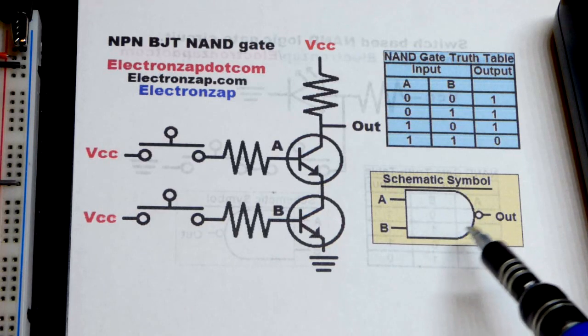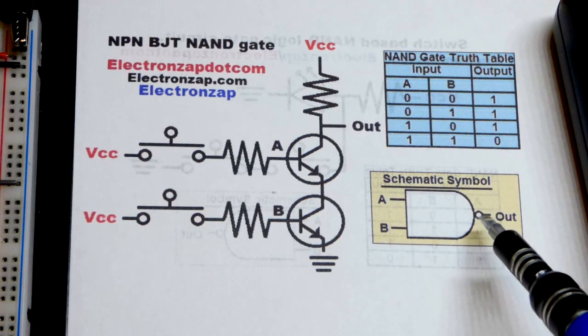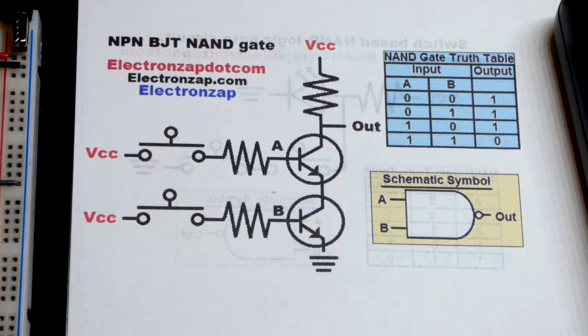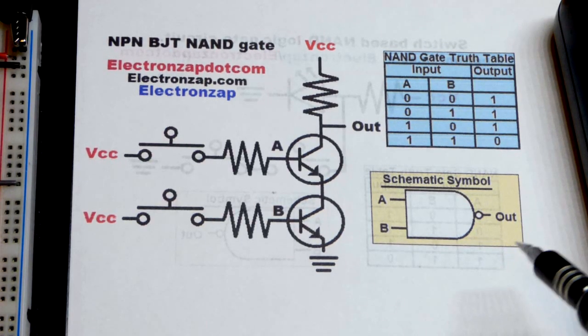It has the NAND gate schematic symbol plus a little dot there, and those dots usually indicate that we have an inverted signal.